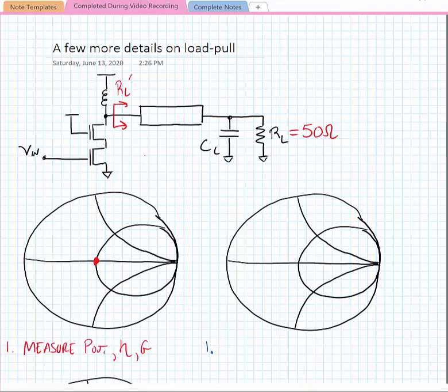But what if R sub L was equal to something different than 50 ohms, say it was equal to 60 ohms? We had a means to change the impedance and we also had a means to sweep the electric length of this transmission line.